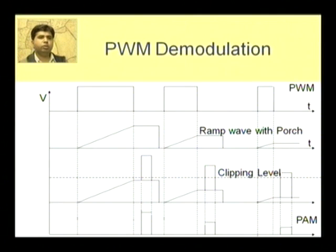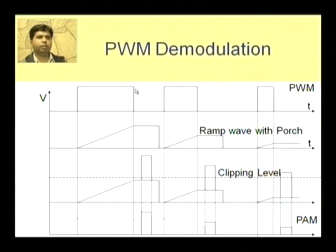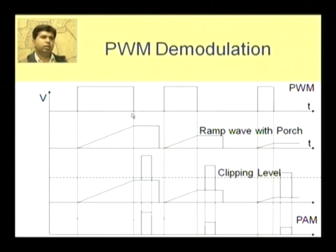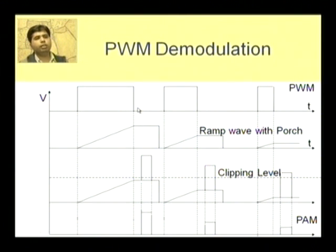This is a diagram which shows the PWM demodulation. This is a pulse width modulated signal. By using this pulse width modulated signal we are generating a ramp signal.